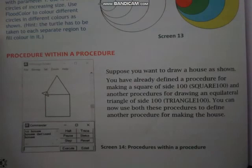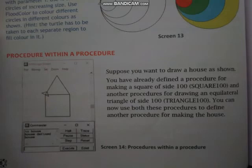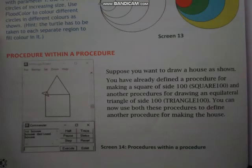Next is procedure within a procedure. Suppose you want to draw a house as shown — you have already defined a procedure for making a square of size 100 and another procedure for drawing an equilateral triangle of size 100. तो ऐसा house draw करने के लिए, using a procedure within a procedure, we can use both these procedures to define another procedure for making the house.